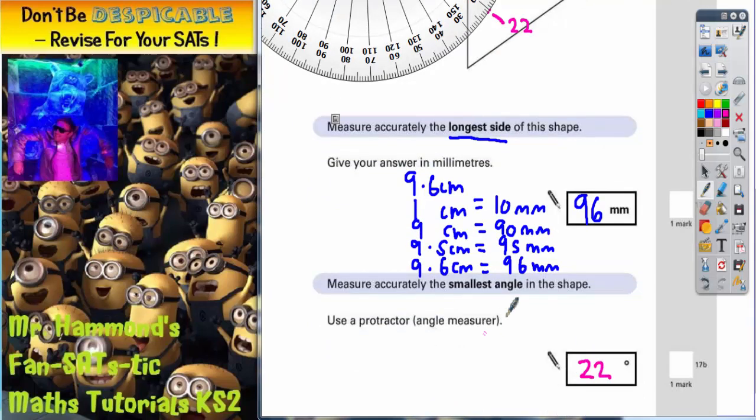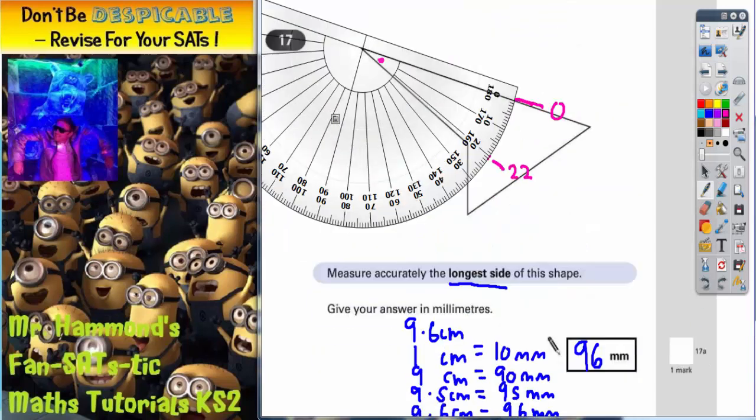Now, normally what they do in this sort of question is they allow you 1 degree either side. So, they will have probably accepted 21 degrees to 23 degrees. You've got to just measure it as accurately as you can. Make sure the center of the angle measurer goes on the corner of the angle. And make sure the zero line goes on one of the lines. And then just start measuring from 0, 10, 20.